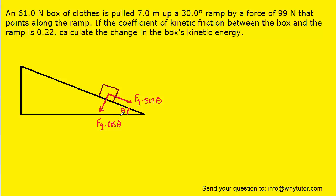There is another force acting here. There is a pulling force of 99 newtons that is causing this box to go up the ramp. So we can show another force pointing up the ramp and label that as 99 newtons.